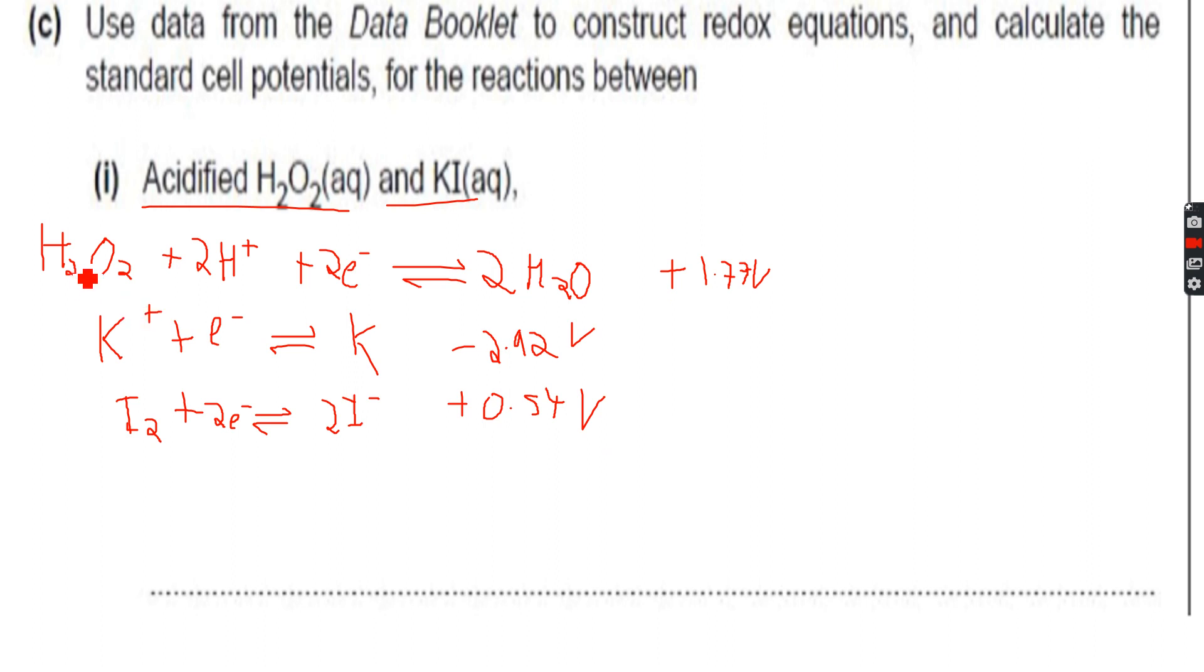We cannot use this half equation because this would give us the wrong reaction. The reaction has to happen between K+ and H2O2, but since this equation will have to be inverted, the reaction will happen between K and H2O2, which is not possible. So we will erase this - it is of no relevance to us anymore.